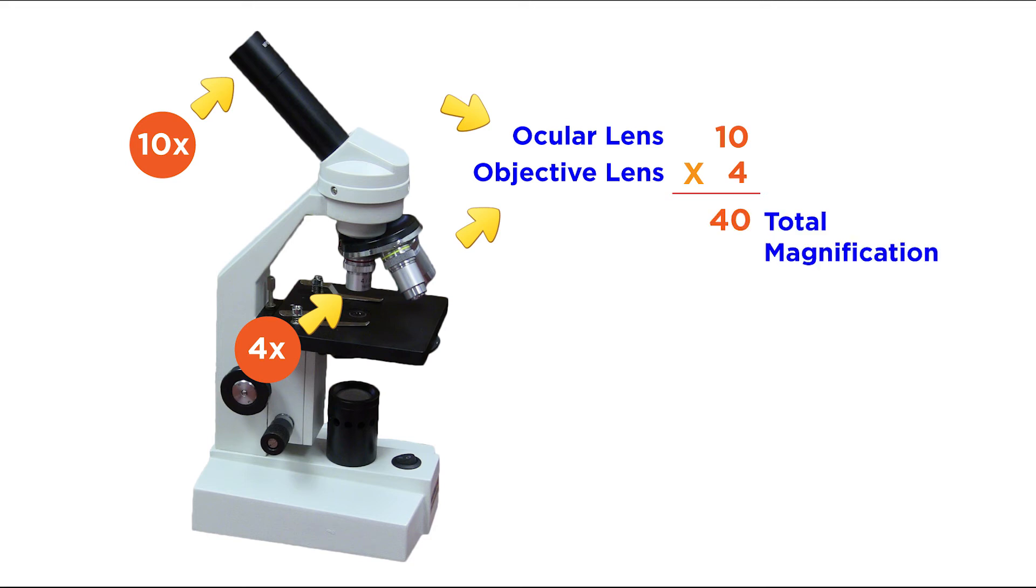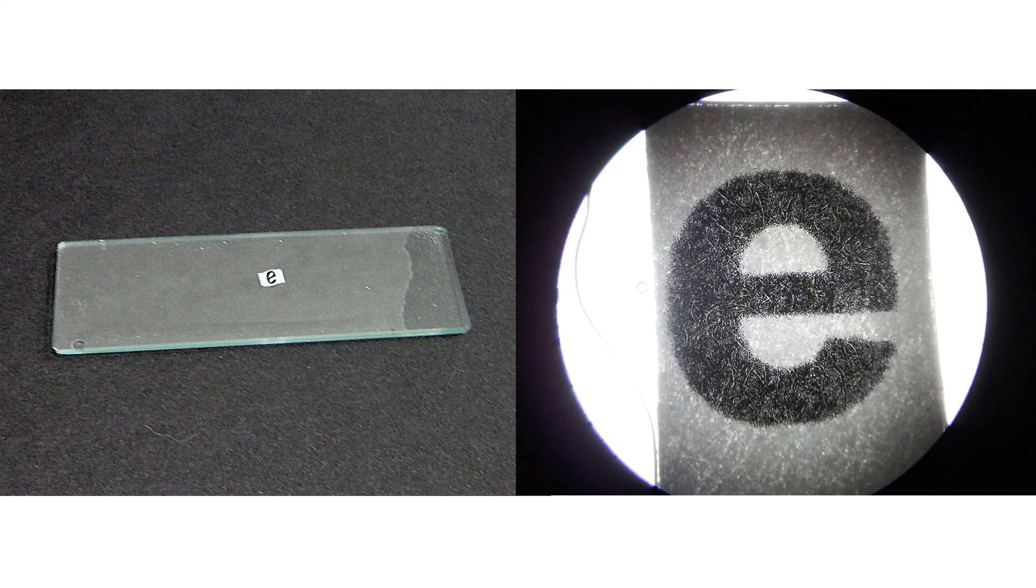The answer, or product, you get is the total magnification of the image. In this case, any image you see through the microscope would be 40 times larger than the actual object on the slide.